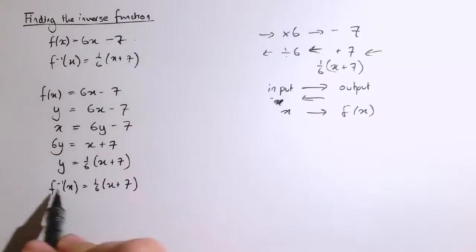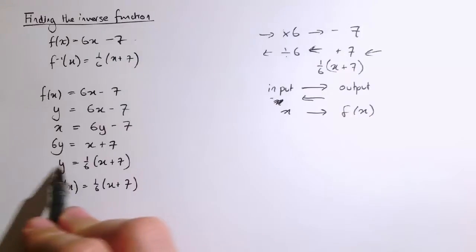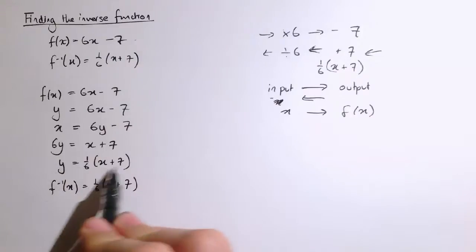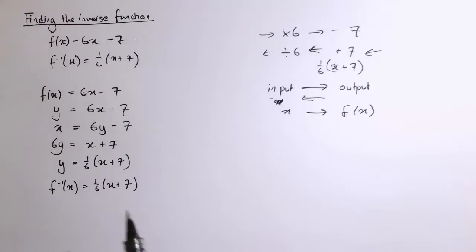saying that the inverse function is 1 sixth x plus 7. My new output for the inverse function, f inverse of x, this new output y is 1 sixth of x plus 7. And we can see that that does work.